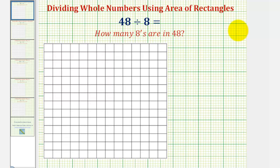Welcome to a lesson on dividing whole numbers using area of rectangles. Let's first consider forty-eight divided by eight. This is asking us how many eights there are in forty-eight. If we think of this in terms of area, this is asking us how many rectangles of area eight would it take to make a larger rectangle of area forty-eight.